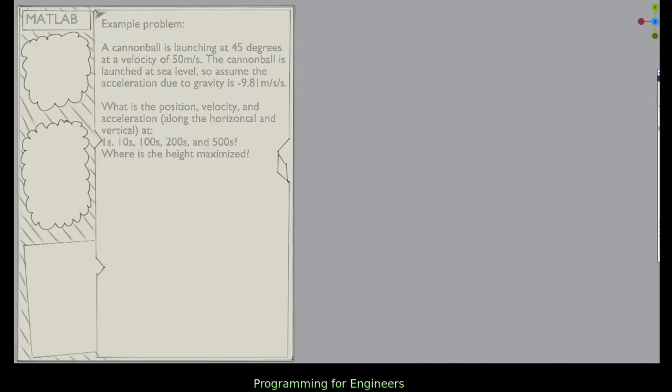Alright, so let's look at an example problem. Let's say we have a cannonball launching at 45 degrees at a velocity of 50 meters per second. And the cannonball is launched at sea level, so assume the acceleration due to gravity is negative 9.81. So that looks like this, got our cannon, 45 degrees.